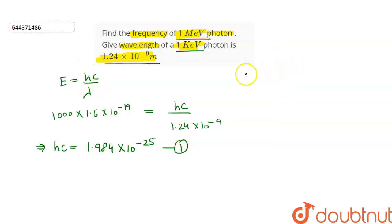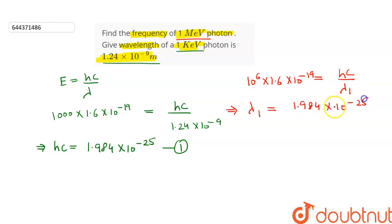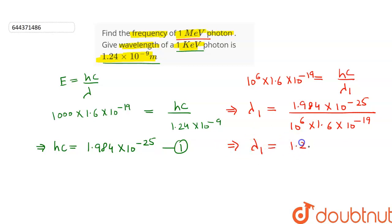Again, let's use this equation but this time energy is equal to 1 mega electron volt. So we can write 10⁶ × 1.6 × 10⁻¹⁹ = hc / λ₁. Substituting the value of hc from equation 1, λ₁ = (1.984 × 10⁻²⁵) / (10⁶ × 1.6 × 10⁻¹⁹). After simplifying, λ₁ = 1.24 × 10⁻¹² meters.